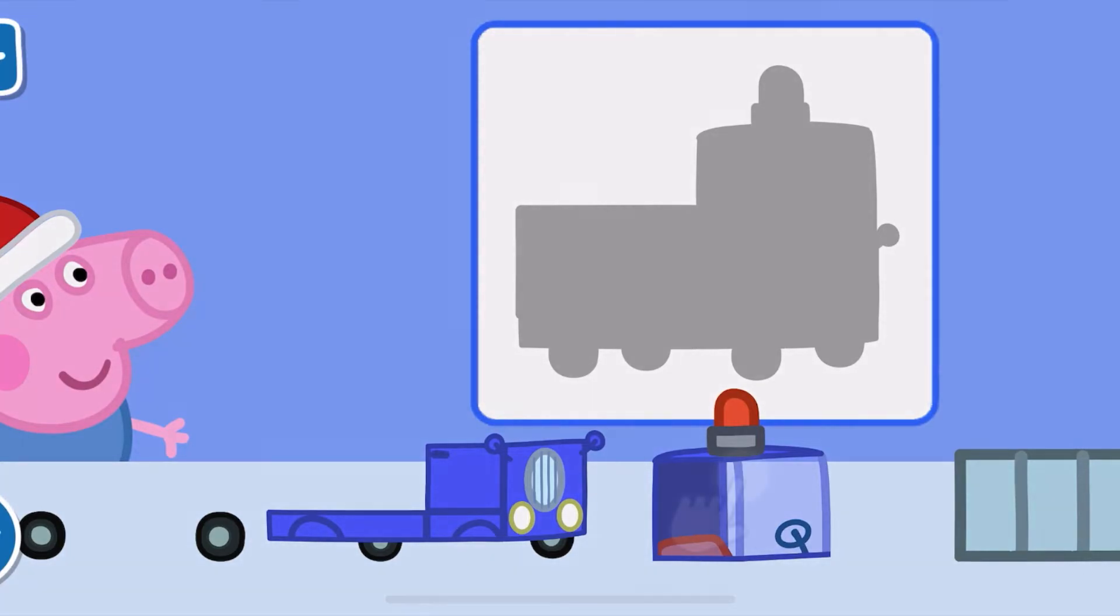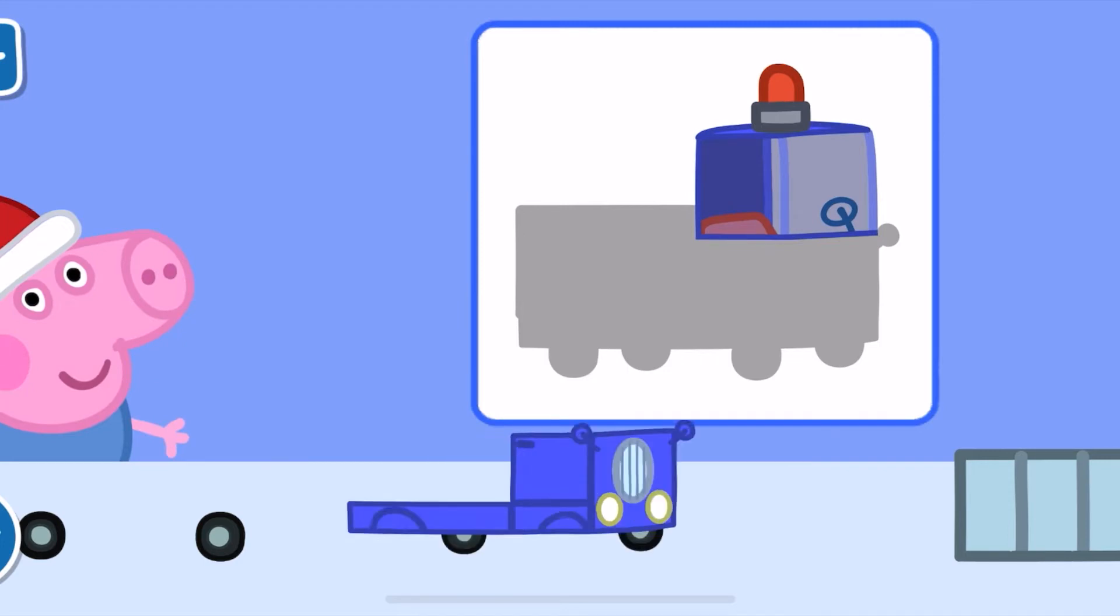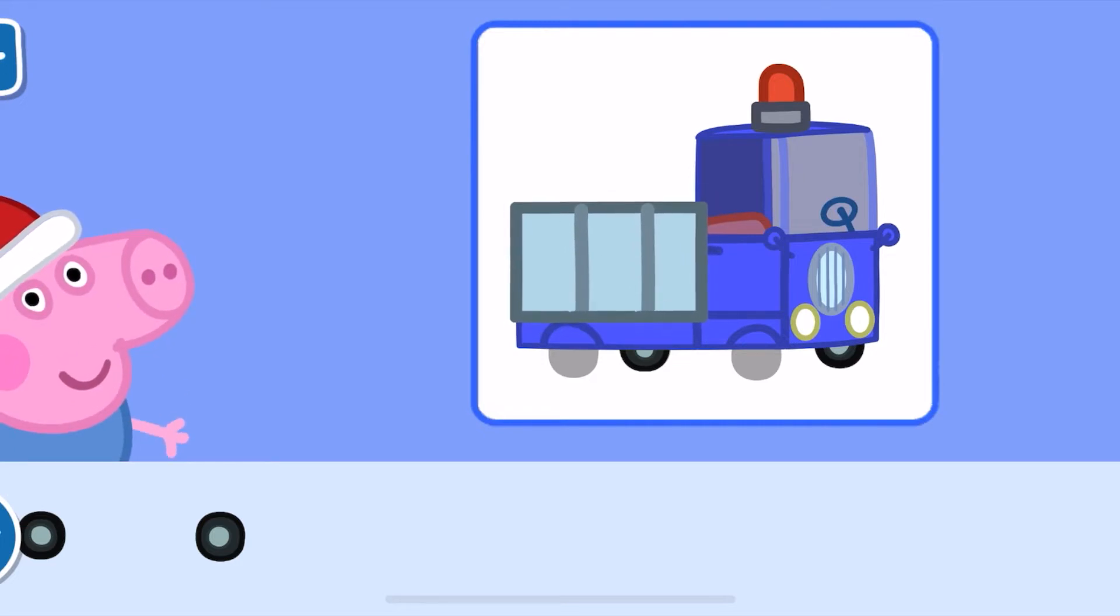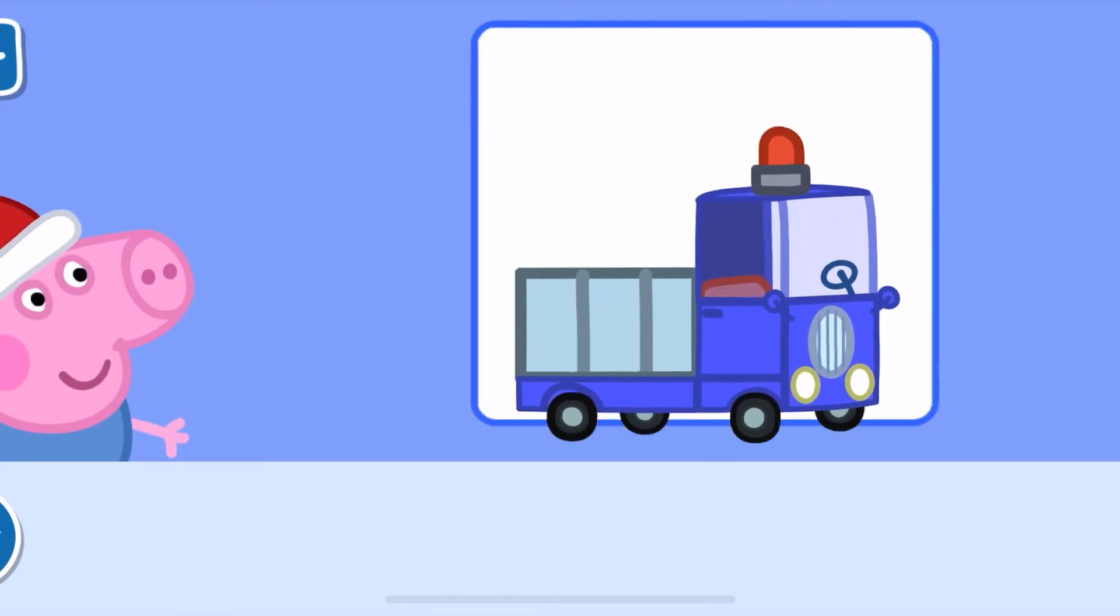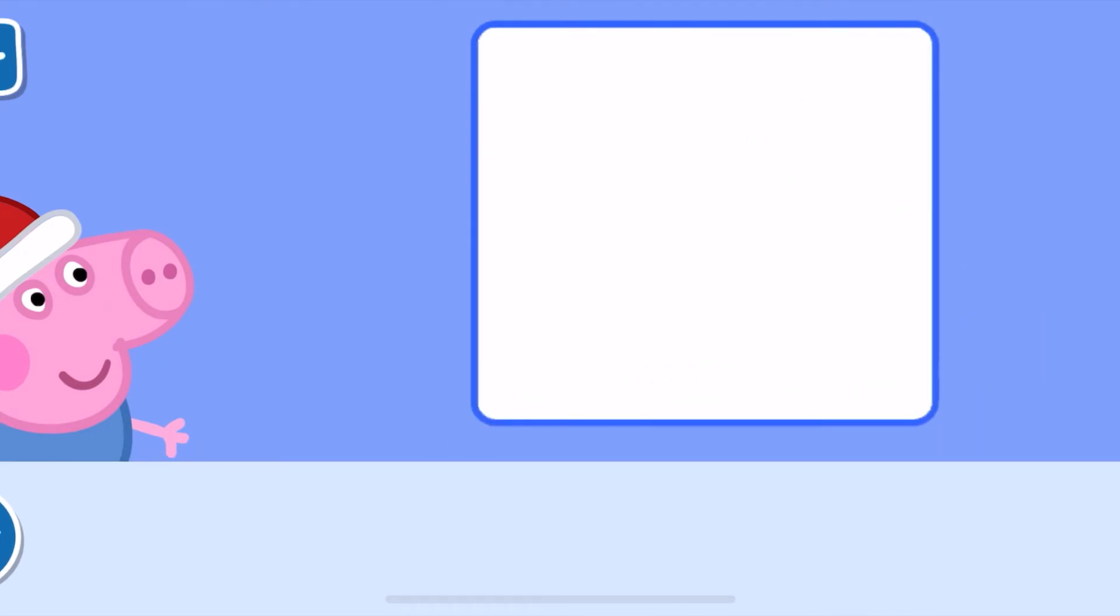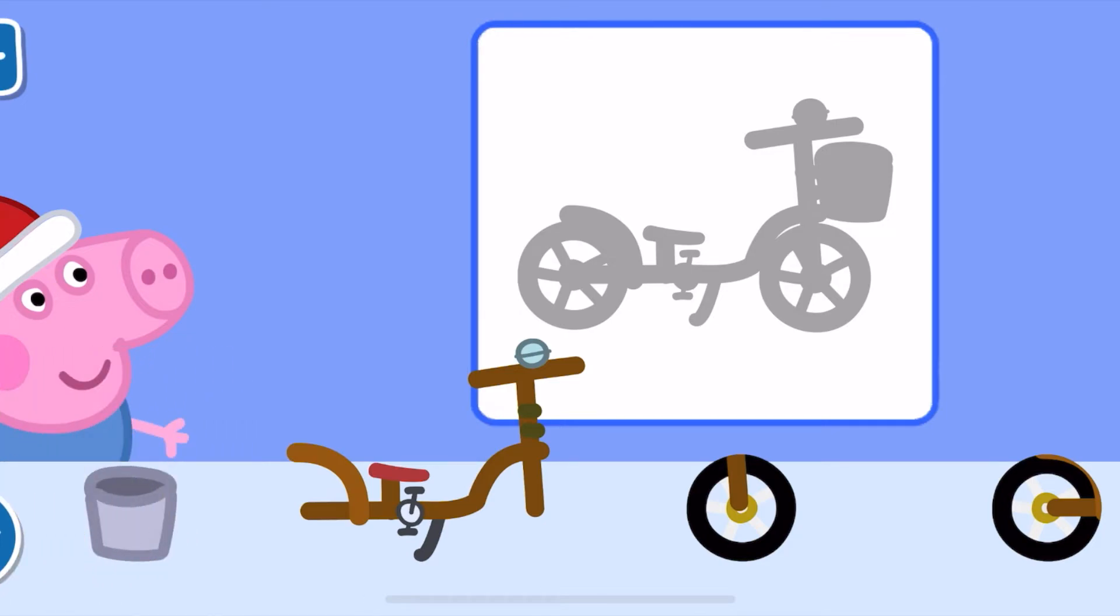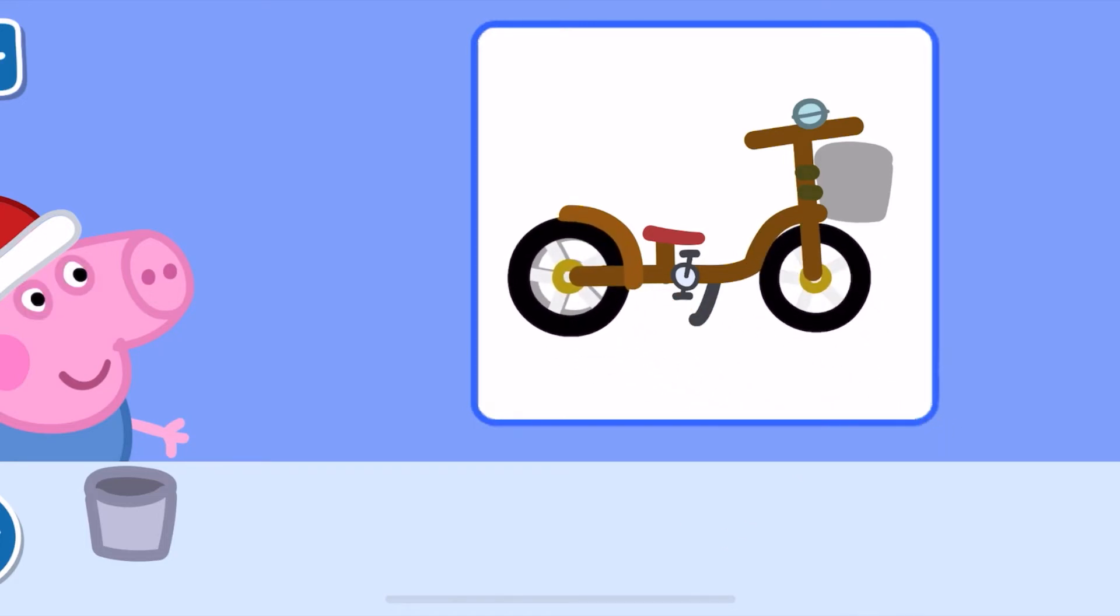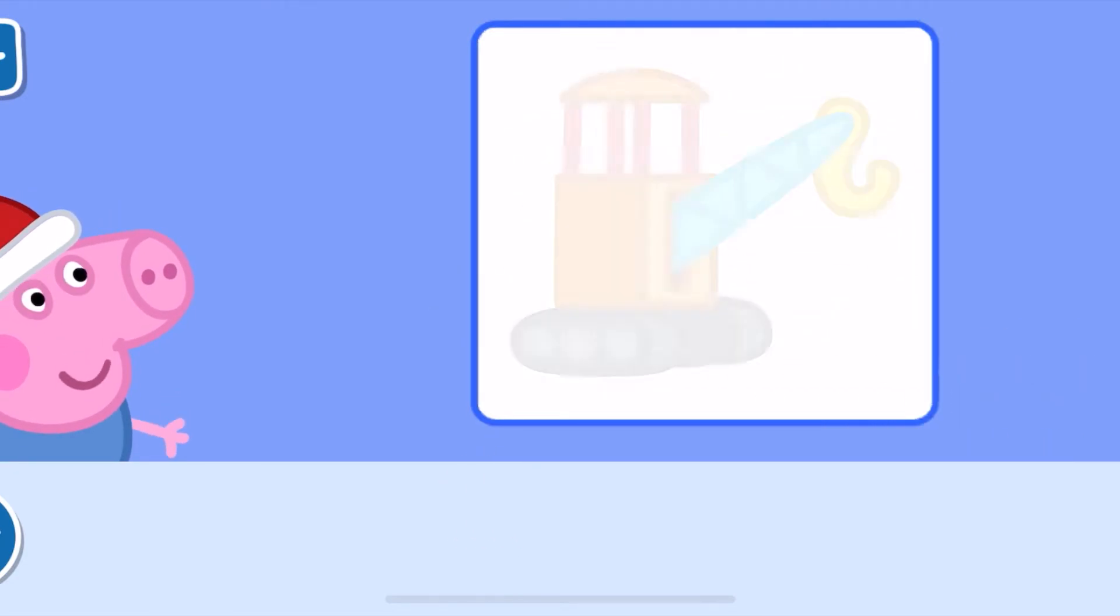Drag each piece into the correct place to build a toy for George. That is a great start. Let's keep going, nearly there. You have made George a happy little piggy. That's a great job. Perfect, George is very happy with his toy.